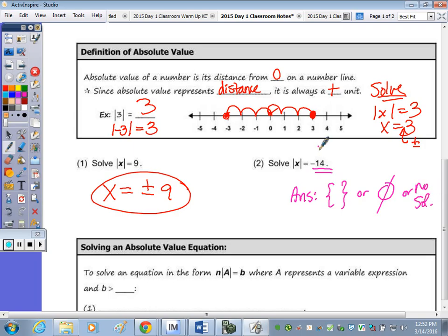So this means no solution, or you could put the zero with the line through it, or you could write no solution. So pay attention to what's on this right side. If it's a negative, there's no solution, you don't need to do any solving.